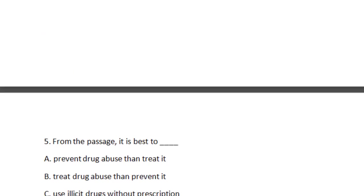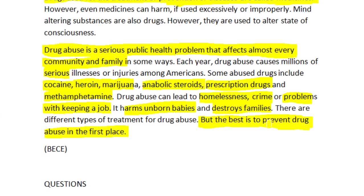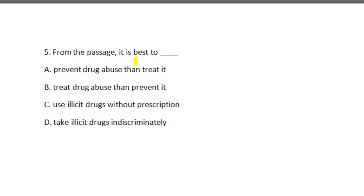Question five: From the passage, it is best to — A) prevent drug abuse than treat it, B) treat drug abuse than prevent it, C) use illicit drugs without prescription, D) take illicit drugs indiscriminately. According to the passage: the best is to prevent drug abuse in the first place. So prevention is better. The answer is A — prevent drug abuse than treat it. To get your answers in a comprehension passage, you need to: one, understand the passage, and two, answer the question according to the passage.